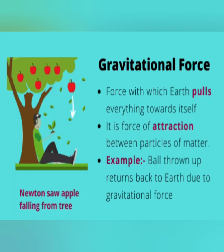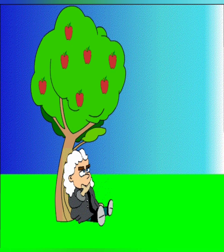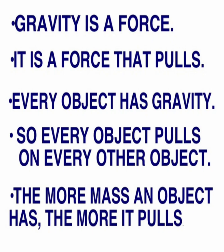Gravitational force is also commonly known as gravity. The pull of the earth on an object towards its surface is called earth's gravity. If you throw a ball up in the air, it comes down to the ground in a few seconds — this is caused by the gravitational pull of the earth. We are able to walk or run because of gravitational force. Due to the absence of gravity in space, astronauts float in the air.